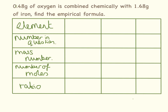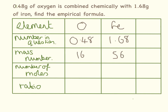Here we have 0.48 grams of oxygen being combined with 1.68 grams of iron — find the empirical formula. The mass number for oxygen is 16 and for iron is 56. So 0.48 divided by 16 equals 0.03, and 1.68 divided by 56 equals 0.03. The ratio here is 1 to 1, so the empirical formula is FeO.